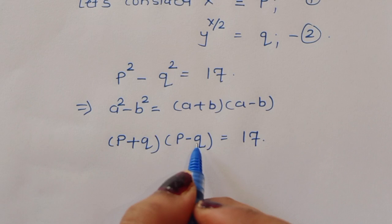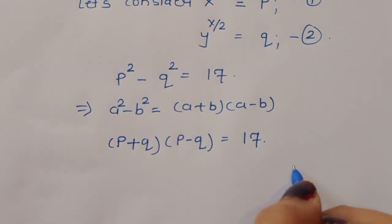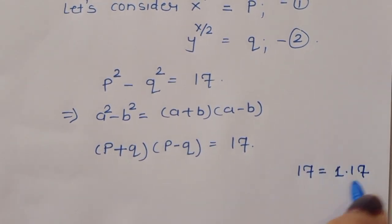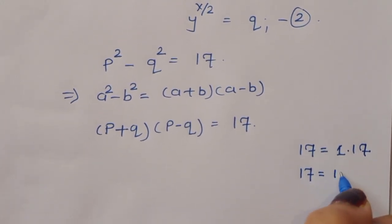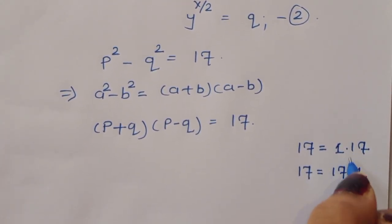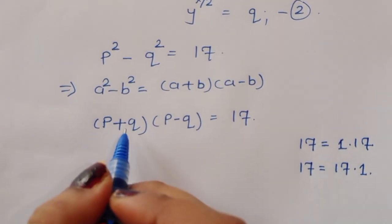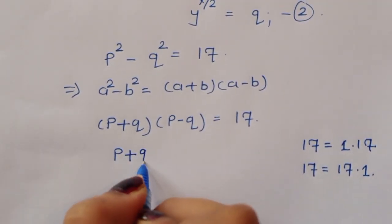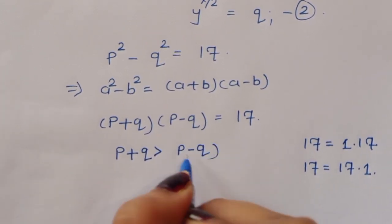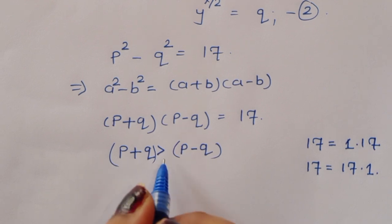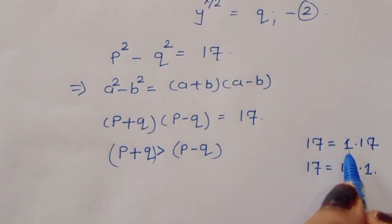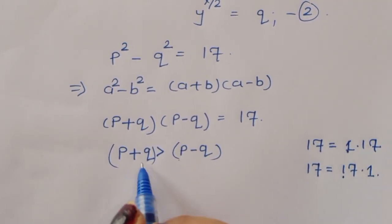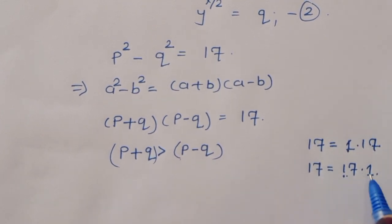So p plus q times p minus q equals 17. Now 17 is a prime number and its factors are 1 times 17 or 17 times 1 — two types of factors. Since p plus q is greater than p minus q, we cannot have p plus q equal to 1, so we take the second option: p plus q is equal to 17 and p minus q is equal to 1.